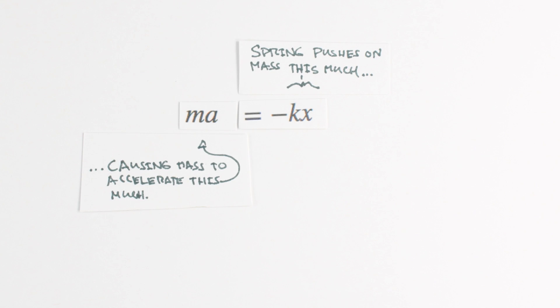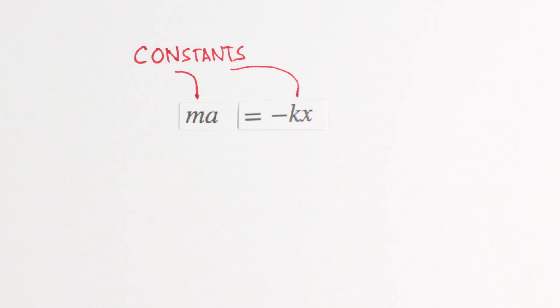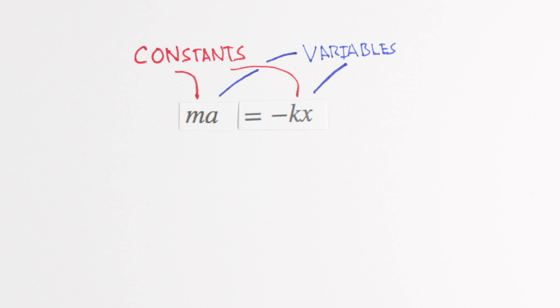We now have a mathematical machine that relates the position of the mass to its acceleration. The further our mass is away from equilibrium, the more the spring pushes or pulls on it. While a and x change as our spring moves, k and m are constant.